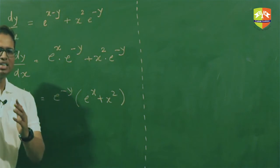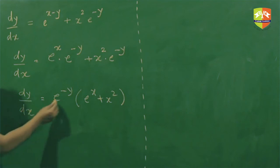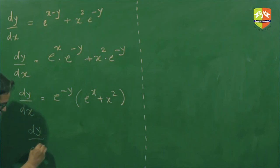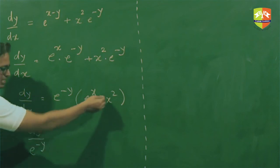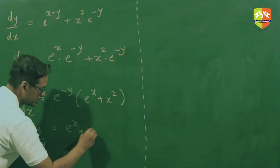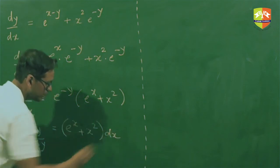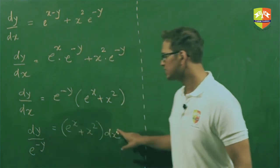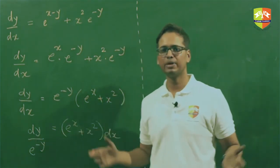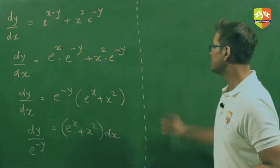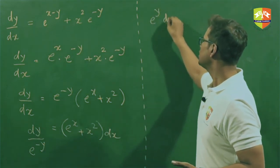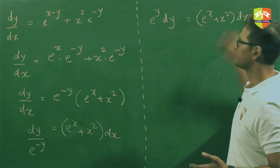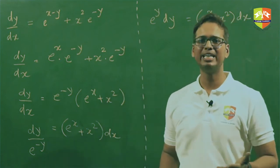Once we identify that separation is possible, we bring e^(−y) to the other side — writing dy / e^(−y) = e^y dy on the left, and (e^x + x²) dx on the right. Remember, dy and dx terms must always be in the numerator when separating variables. Now the variables are fully separated with their differentials.